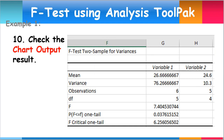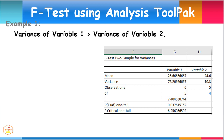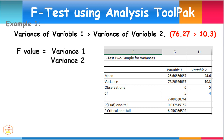Check out the chart output results. We are provided the mean and variances for both variables. Also, there are results for the F-value, F-critical, and P-value. When comparing variances, it's important to make sure that the variance of Variable 1 is higher than the variance of Variable 2. This is the case in our example: 76.27 is greater than 10.3. If not, you have to swap your data. As a result, Excel calculates the correct F-value, which is the ratio of variance 1 to variance 2, or F = 76.27 / 10.3 = 7.405.